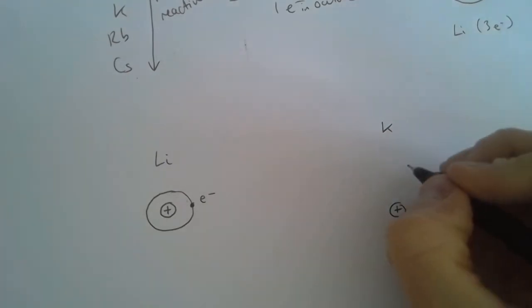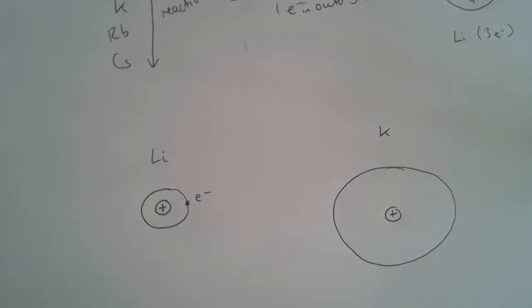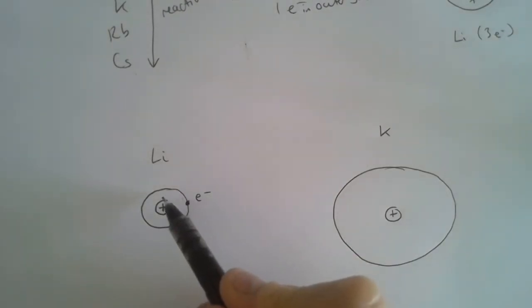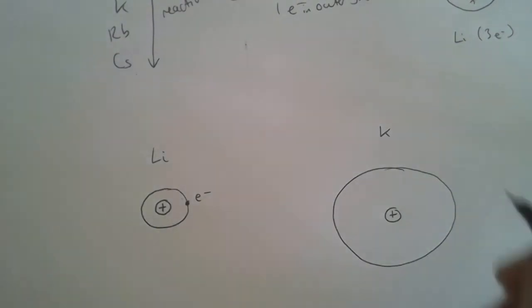If we do a similar thing for potassium, potassium is a much larger atom because it's got more shells in between. So lithium has only got one shell between the nucleus and its outer shell. Potassium has got three. I'm just not drawing them here. I'm only drawing the outer electron.